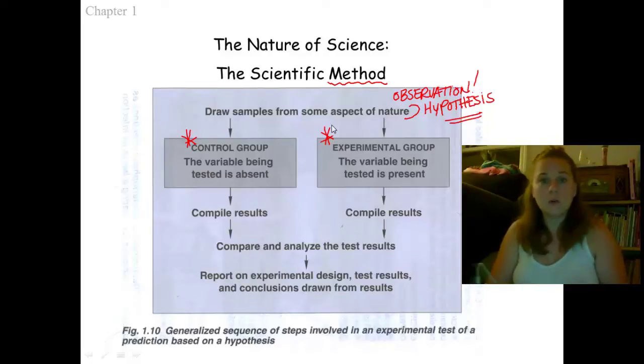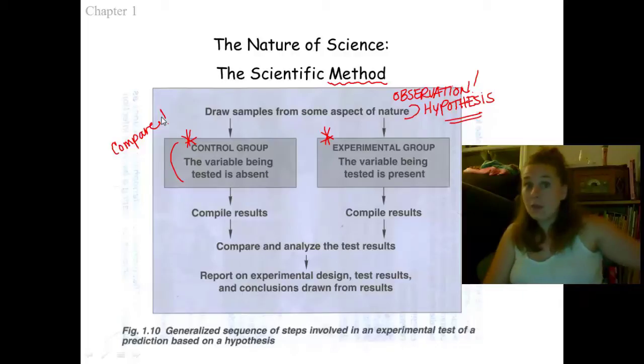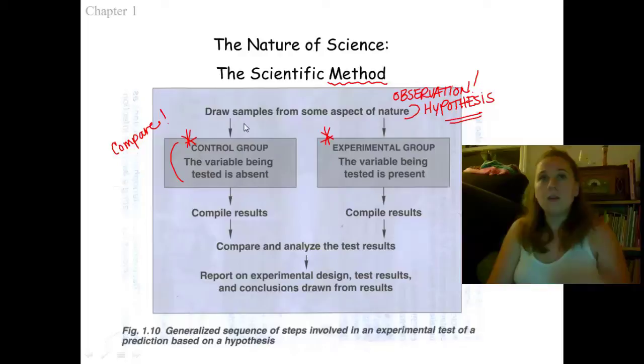My control group is going to be the group that I'm going to compare my results to. This is the group that I compare everything to. Without this, I can't say if light has any effect. If I throw a bunch of plants in the dark, if I don't have any plants growing out in the light, I need to have both. Otherwise, I have no idea. My control group, that's going to be the one that has the absence of any variable that's been changed. It's going to just be the way nature intended.